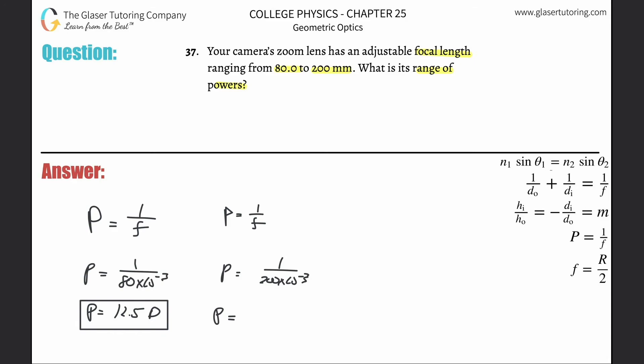And look at that - 5 diopters. So this is the range. If you had to subtract them, you could find the difference, but the highest and lowest is what we have here. Thanks so much for tuning in, I'll see you in the next one.